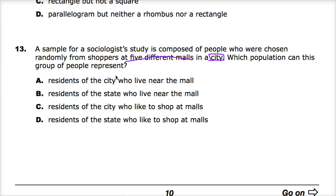Option C: residents of the city who like to shop at malls — that's pretty good. They're at the mall, so they may like to shop there; they're not just ordering everything online. Option D: residents of the state who like to shop at malls. C and D are really competing here, but the sampling was done in the city, not the state. So D is probably incorrect. Your answer to number 13 is C.